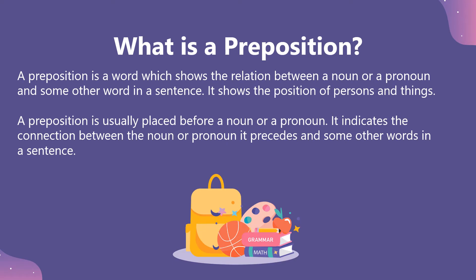What is a preposition? A preposition is a word which shows the relation between a noun or a pronoun and some other word in a sentence. It shows the position of persons and things. A preposition is usually placed before a noun or a pronoun. It indicates the connection between the noun or pronoun it precedes and some other words in a sentence.